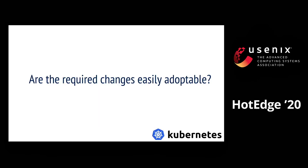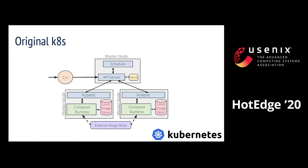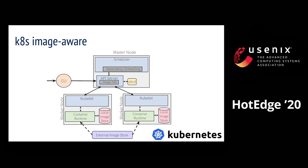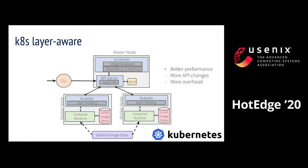Before we go to the results, let's do a reality check — is this easy to deploy on today's edge infrastructure? This is an overview of today's Kubernetes container orchestrator. The master node comprises an API server and a scheduler. The worker nodes contain the node agent Kubelet, the container runtime, and an external image repository. To support image matching, one only needs to enable image info tracking on the API server and the image match scheduling logic in the scheduler. For layer matching, one needs to add a layer tracking module on the node agent and the API server, the scheduling logic, and an image resolution module to identify layers in the requested image. These changes involve only a few hundred lines of code in total.